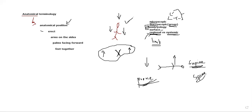The body is divided into two main areas: the axial region and the appendicular region. The axial region consists of the head, the vertebral column, and the trunk. The appendicular region is anything coming from the trunk — your pectoral girdle and upper limbs, and your pelvic girdle and lower limbs.